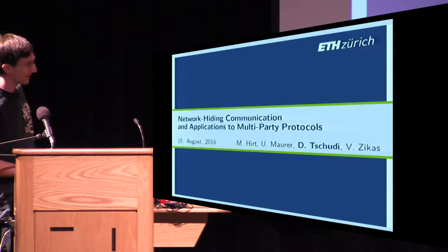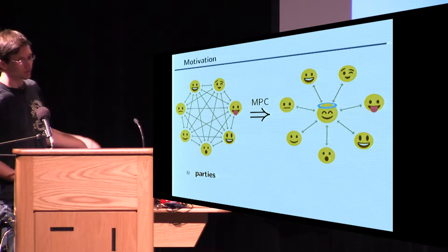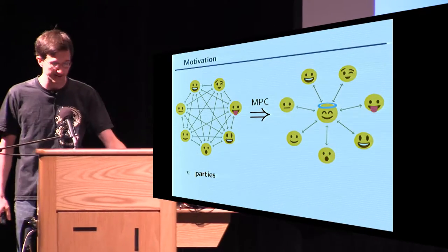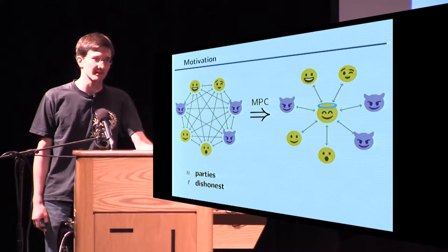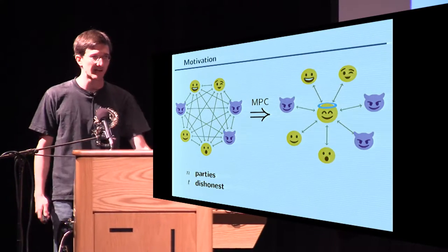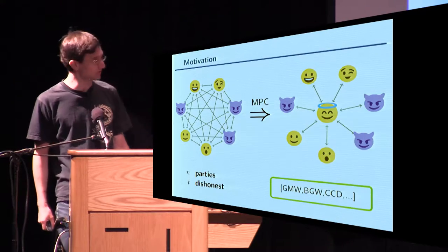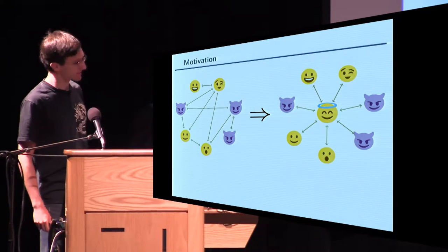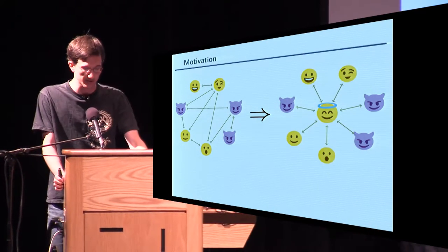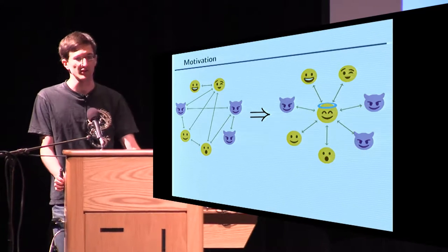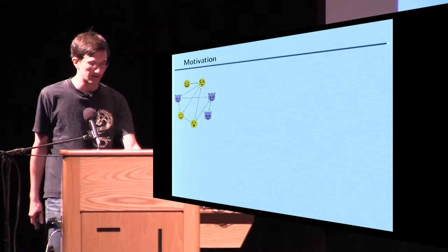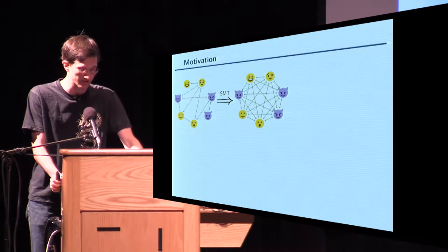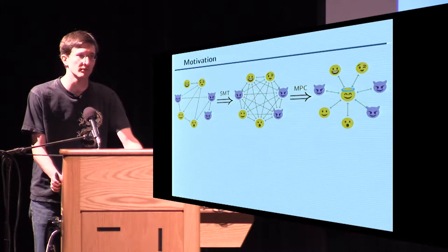So you all know MPC: you have N parties, and your goal is to construct a trusted party in the middle. The challenge is that certain parties are dishonest, and there are many protocols to achieve this task. Now let's look at the situation where we have an incomplete network — we want to do the same, we want to build a trusted party. It's well known: you complete the network using secure message transmission, and then do MPC on top.